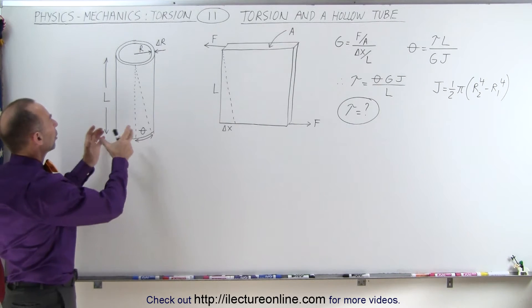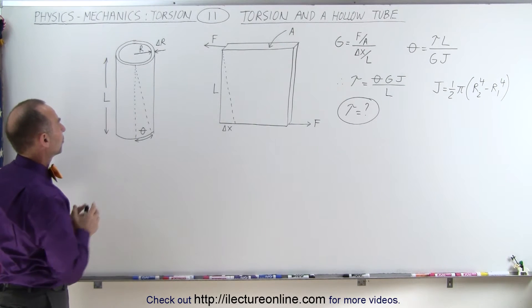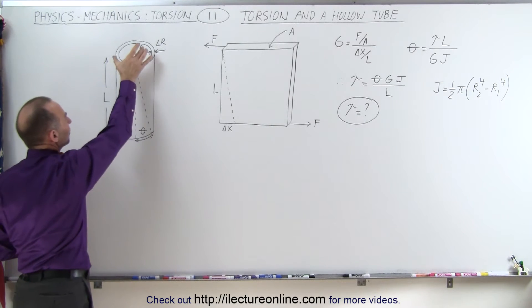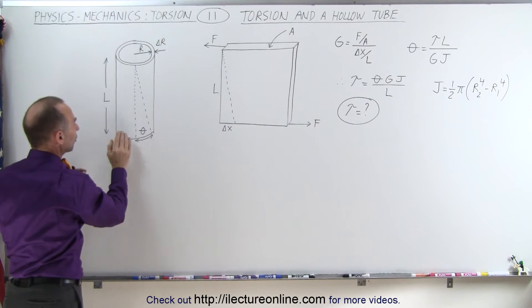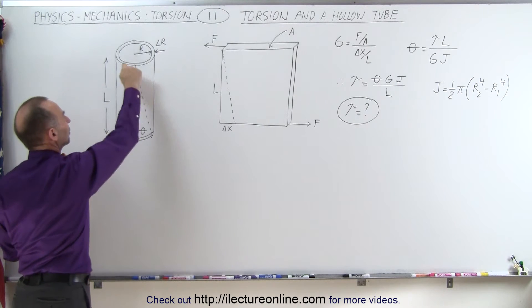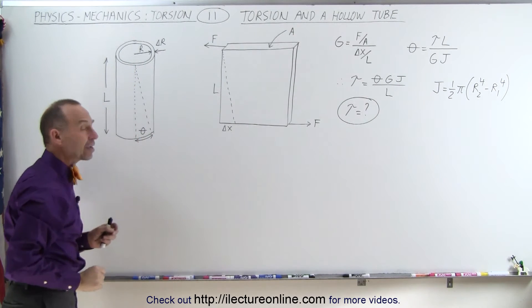So let's say we have a hollow tube right here, which is made out of a certain material, and when you apply a torque at the very bottom here and keep the top portion in place, you can see that there's going to be a twisting motion and that the bottom will twist relative to the top, and you'll have a twist angle theta.